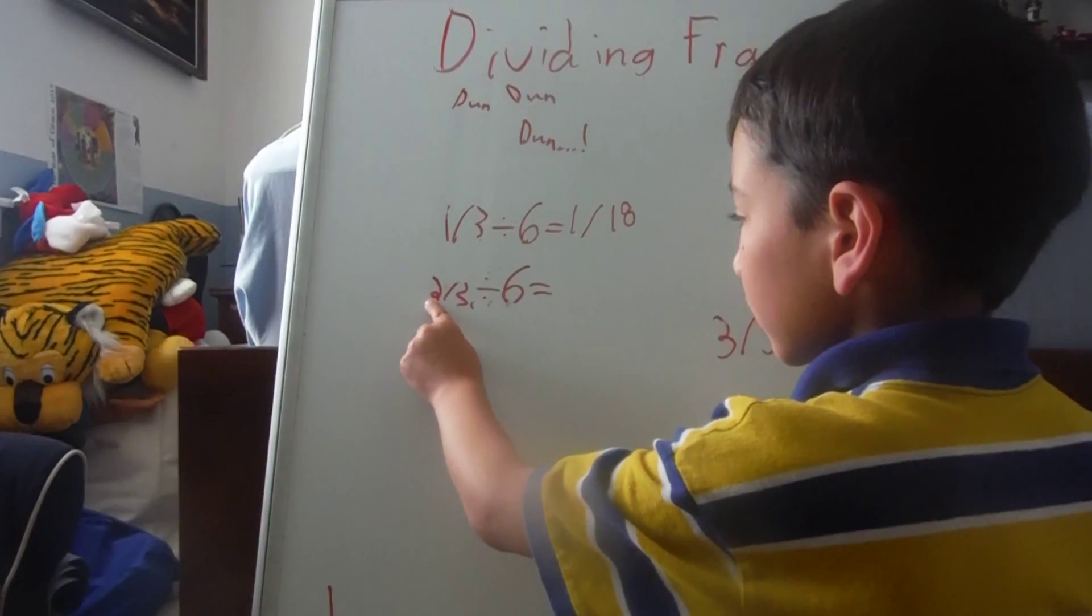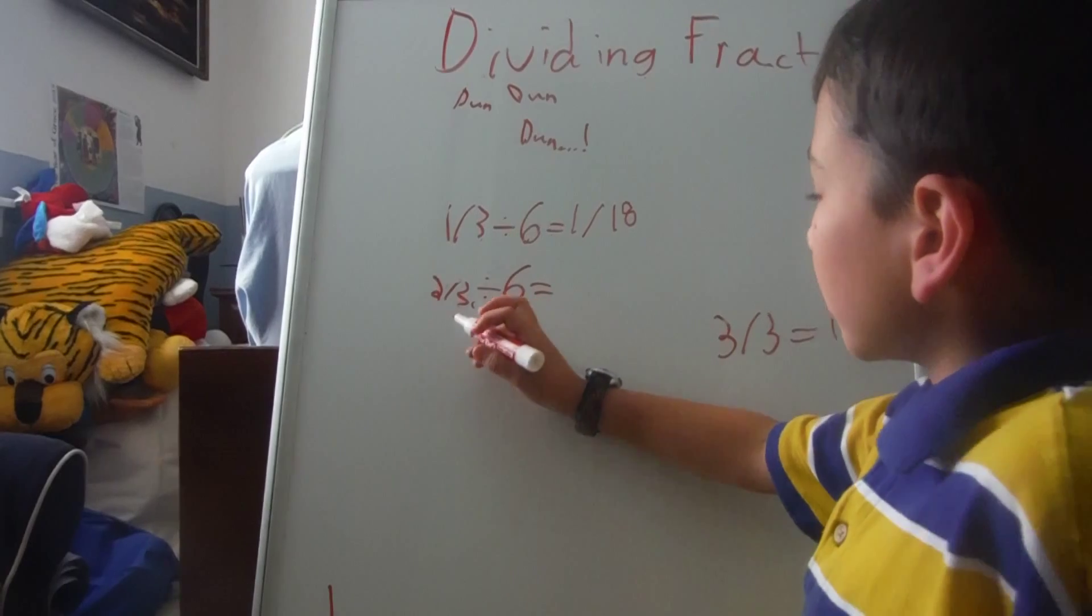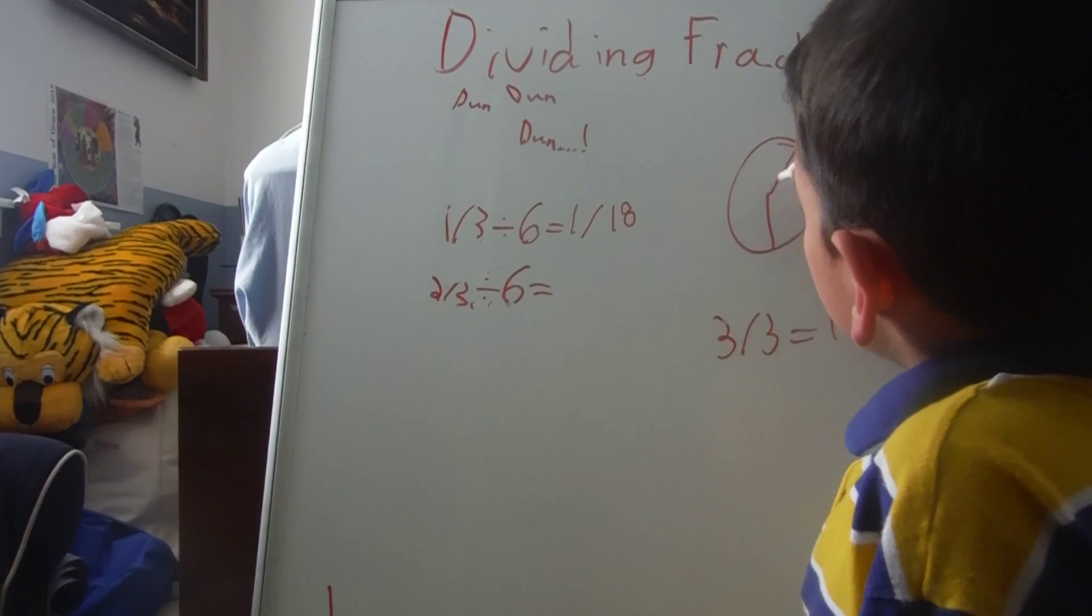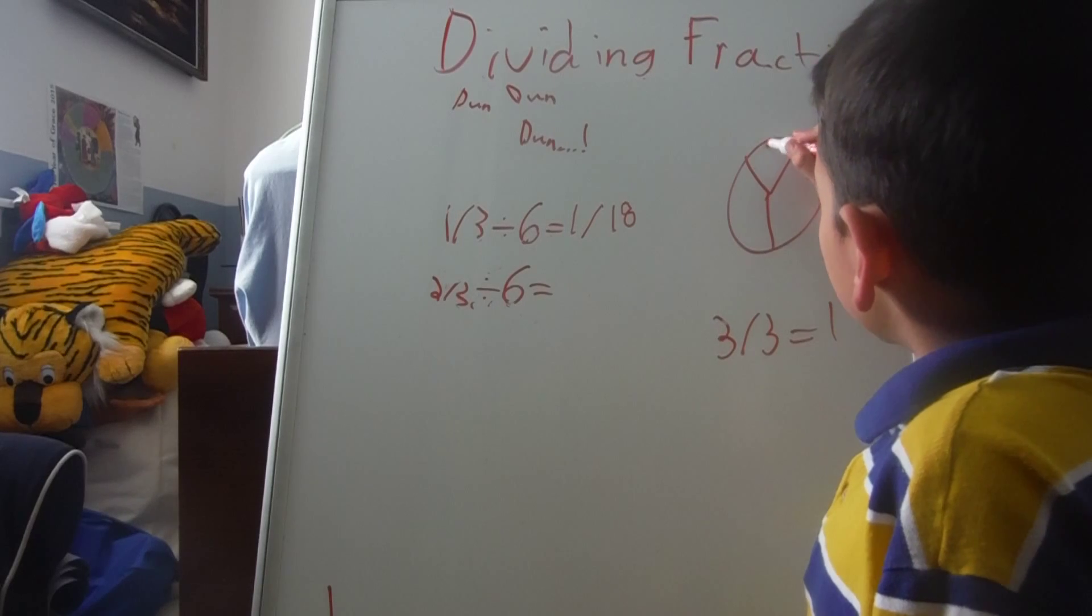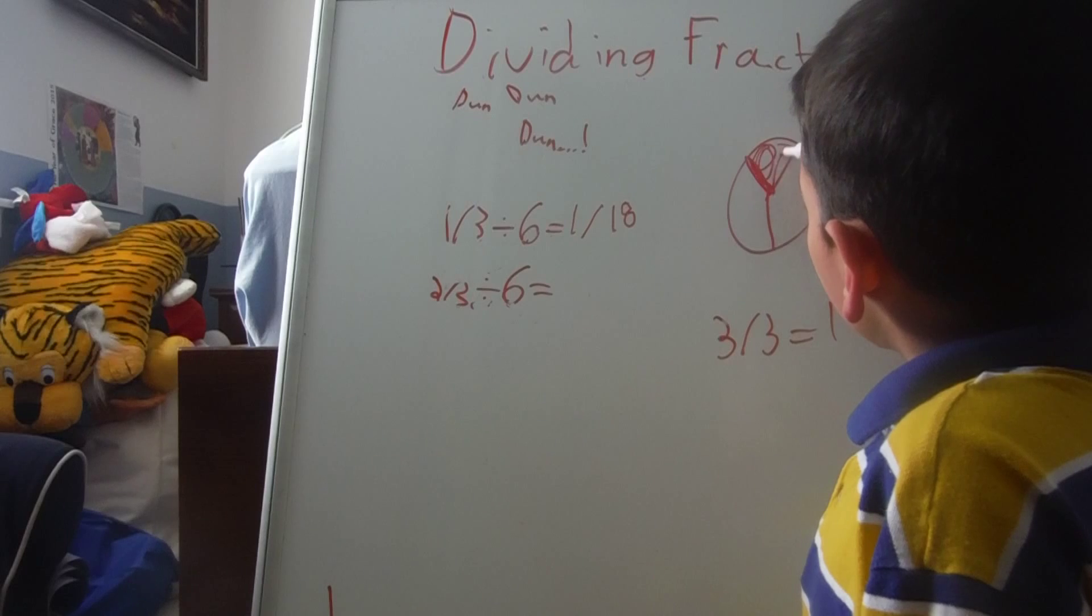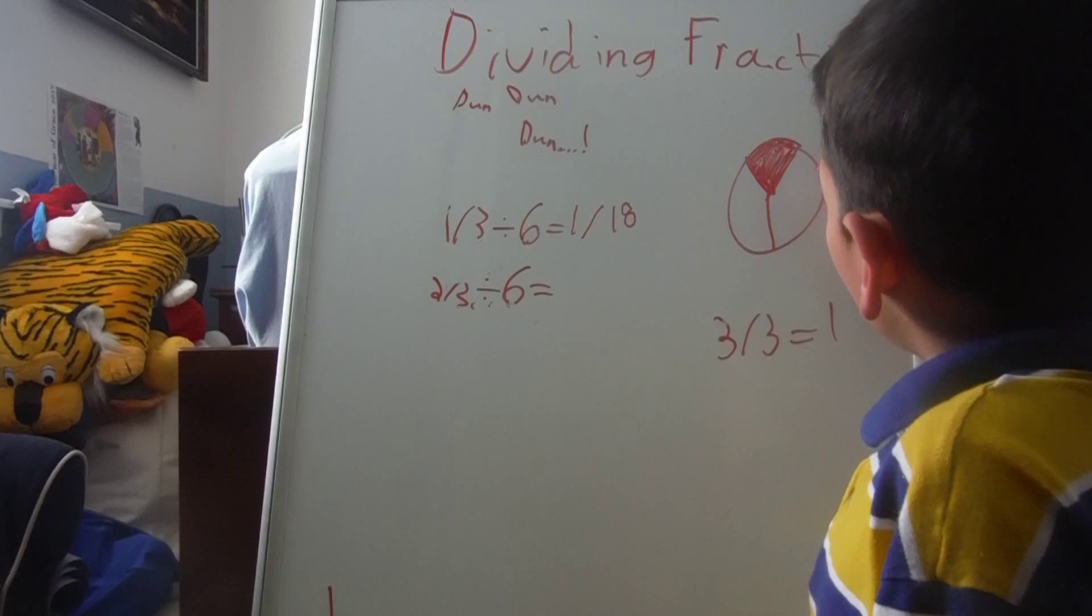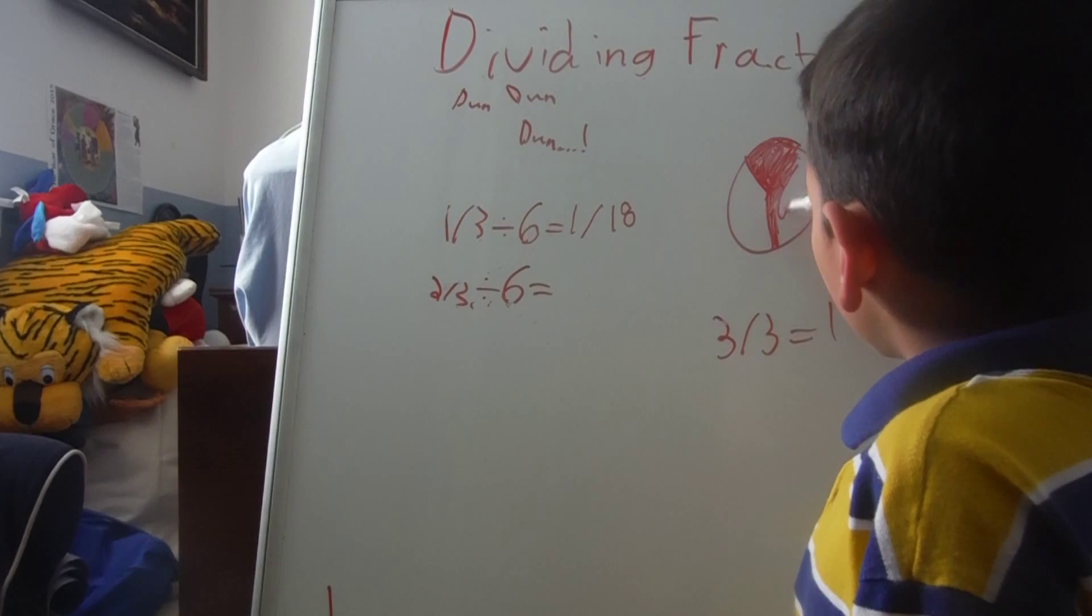So, we've got that down. And then two thirds divided by six. Since that's one difference, since that's a difference, we all have to, well, look, look at this. This is one, two, three thirds.